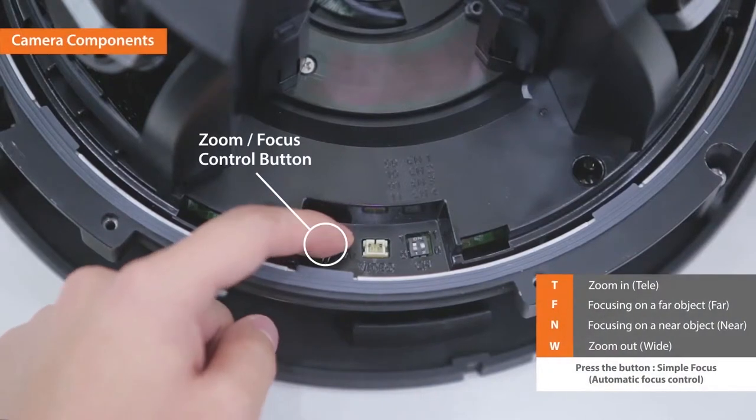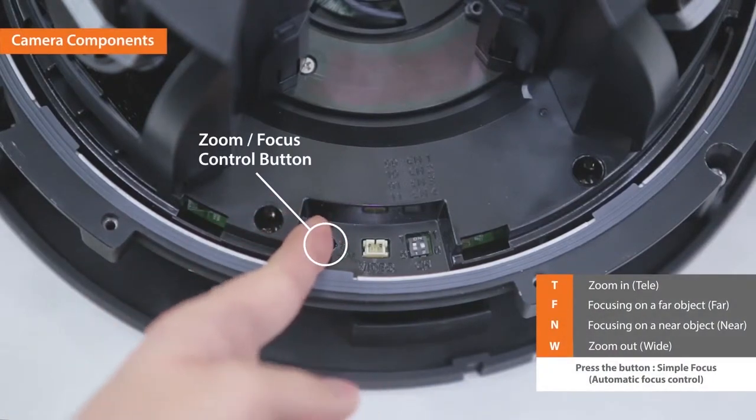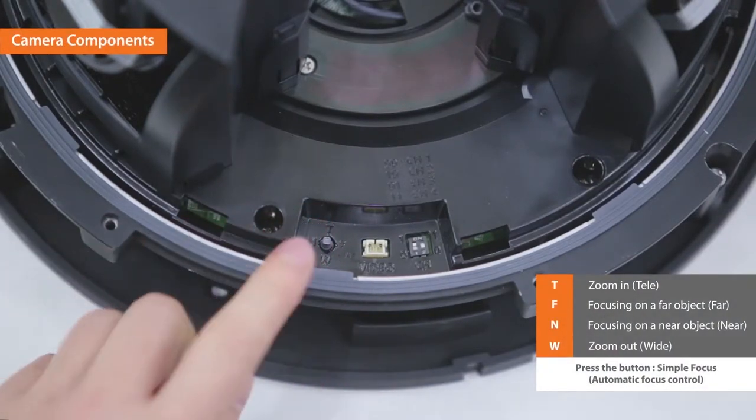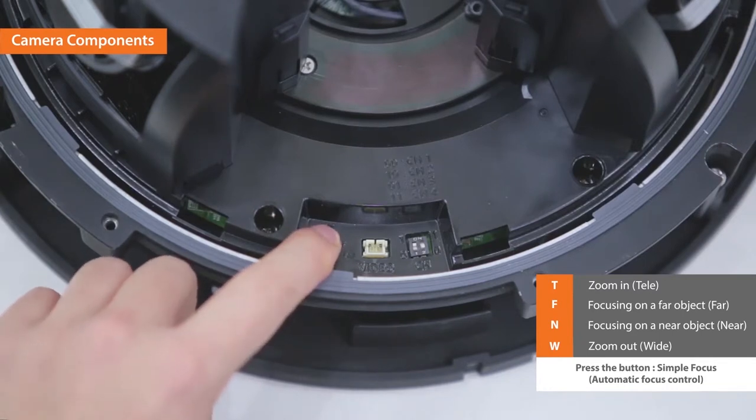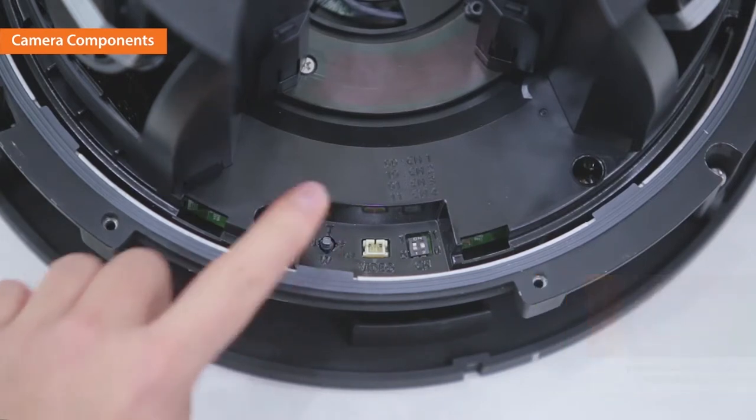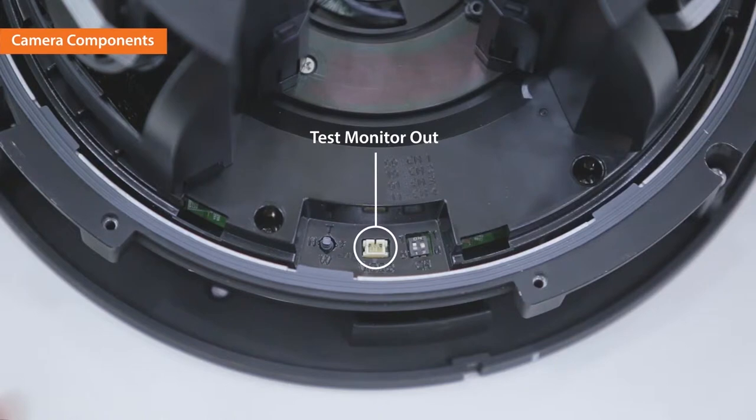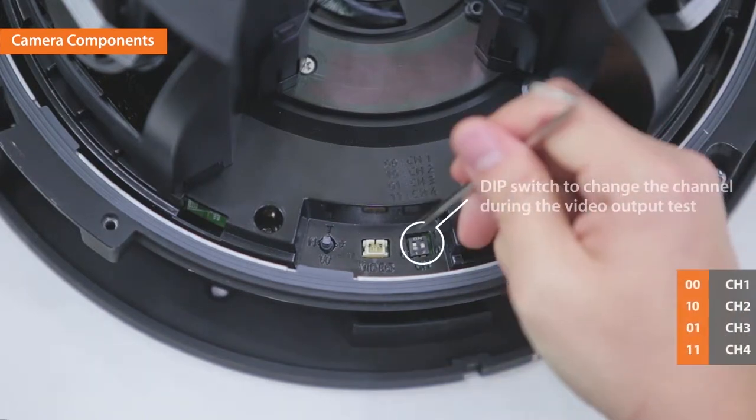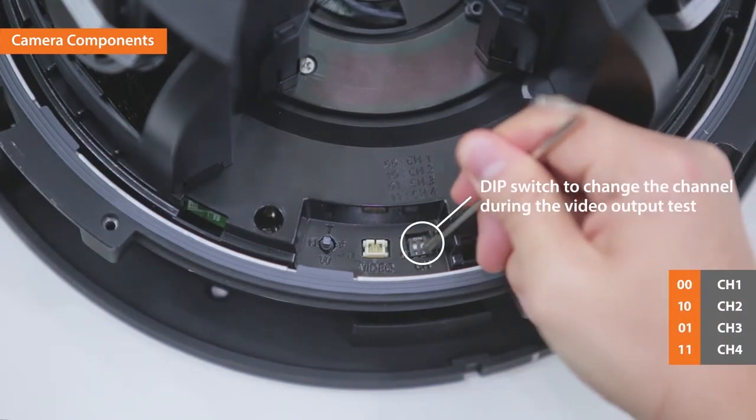On the camera body, there is a zoom focus control button. Press the button for automatic focus control. Test monitor out port and dip switch to change channels are also located here.